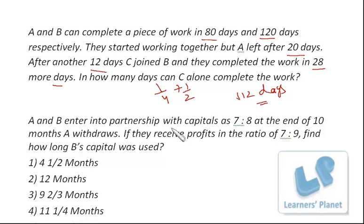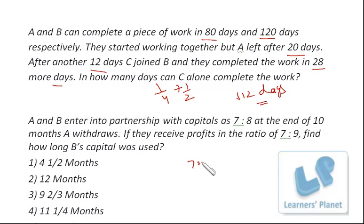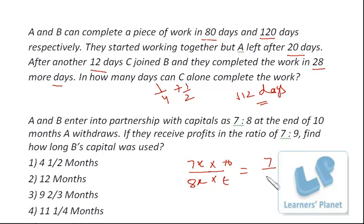After that, A and B enter into partnership with capital in ratio 7 and 8. At the end of 10 months A withdraws. If they receive profit in the ratio 7 to 9, find how long B's capital was used. The formula is: capital of A multiplied by its tenure, to capital of B multiplied by its tenure, equals the profit ratio. So 7 times 10 months for A's tenure, and B's tenure T we have to find out.